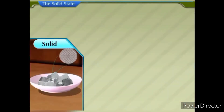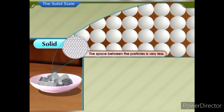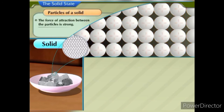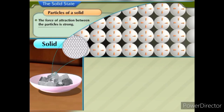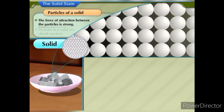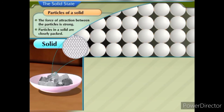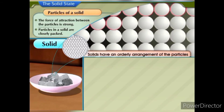In solids, the space between the particles is very less, and thus the force of attraction between the particles is strong. Particles in a solid are closely packed. The kinetic energy of the particles is very less, and so solids have an orderly arrangement of particles.